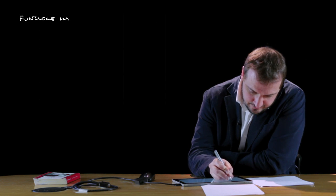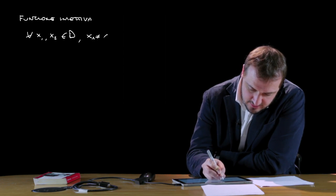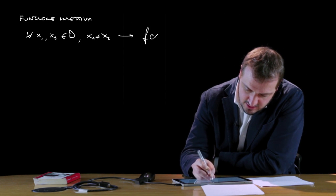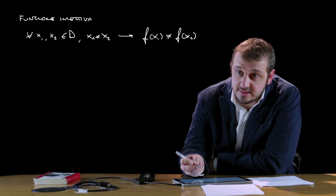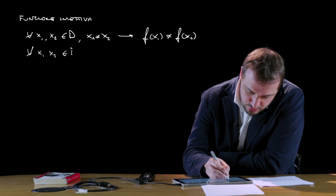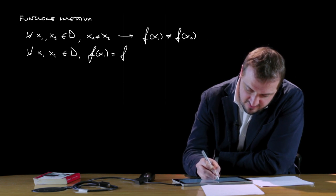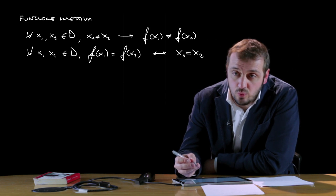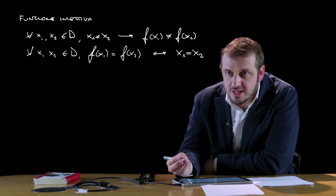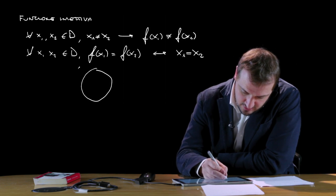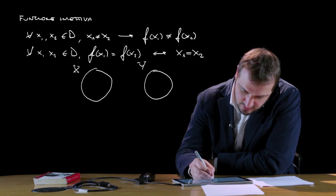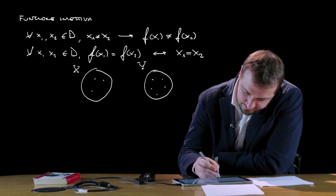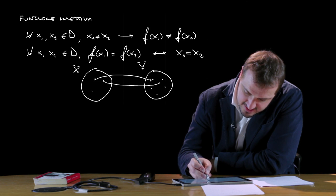Una funzione viene definita iniettiva se per ogni x1 e x2 appartenenti al dominio D, con x1 diverso da x2, abbiamo che f(x1) risulta essere diverso da f(x2). Detta in altri termini, f(x1) sarà uguale a f(x2) se e solo se x1 coincide con x2. Questo vuol dire che qualunque elementi distinti di X hanno immagini distinte in Y. Graficamente, gli elementi di X hanno un'immagine diversa in Y.